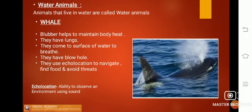Whale has blubber. Whale is a mammal. It has lungs and has to come to the surface of water for breathing. It has a blowhole. Whales use echolocation to navigate, find food and avoid enemies.